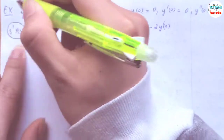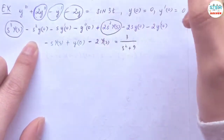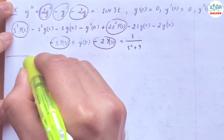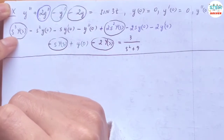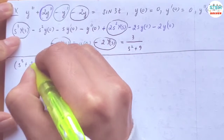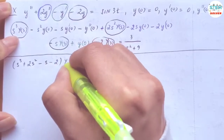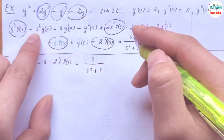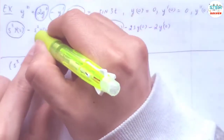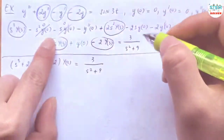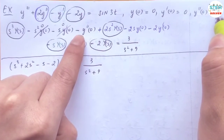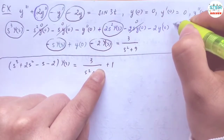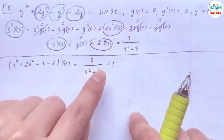Now we collect all capital Y(s) terms. Drawing a line to separate the steps, we find Y(s) in parentheses: s cubed plus 2s squared minus s minus 2, times capital Y(s), equals 3 over s squared plus 9. Since y(0) equals 0, y prime(0) equals 0, those terms vanish. y double prime(0) equals 1, giving negative 1 on the left, which moves to positive 1 on the right. All remaining initial condition terms are zero, so this is all we have.